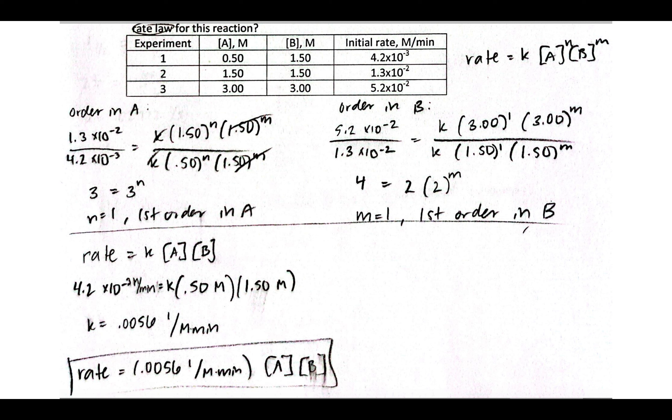The second one, the experimental data doesn't set up as clean within that. We don't have a way to isolate as cleanly what the order would be for reactants A and B. But we can still get to it and find that it's first order for both. This is one that, at least in class, we didn't practice. So I consider it sort of a stretch question.